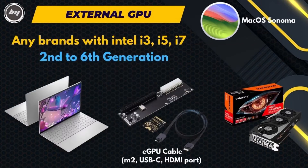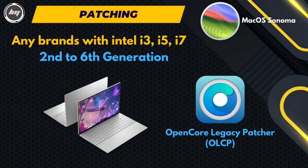If you have Intel Core with 2nd to 6th generation and want to install Sonoma, you can also use the eGPU cable method. But if you're on a budget, you can install the OpenCore Legacy Patcher after installing Sonoma on your machine.